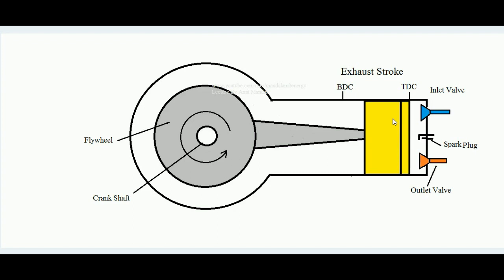So there are four strokes: suction stroke — inlet valve opens, piston moves from TDC to BDC; compression stroke — both valves closed, charge is compressed, piston moves from BDC to TDC; then a spark ignites the charge, developing high pressure for the working stroke — piston moves TDC to BDC; finally the outlet valve opens and burnt gases are expelled. But practically, what happens is different.